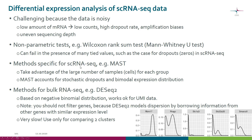There are methods specific for single cell data such as MAST. These methods can take advantage of the large number of samples for each group — a cluster is considered as one group and you have many cells in that cluster, so many samples. MAST can account for the stochastic dropouts and also model expression distribution. As you can see from examples of expression value distributions, they are not nicely normal — you have all sorts of shapes, including a bimodal shape.